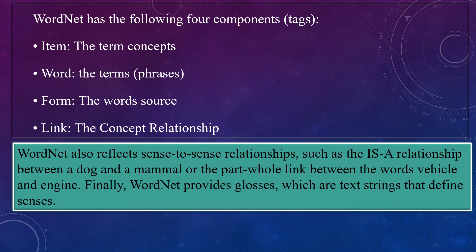WordNet also reflects sense-to-sense relationships, such as the is-a relationship between a dog and a mammal, or the part-whole link between the words vehicle and engine. Finally, WordNet provides glosses, which are text strings that define senses.